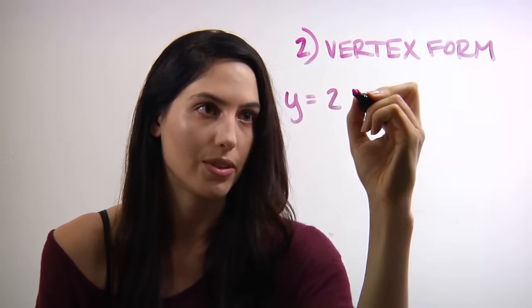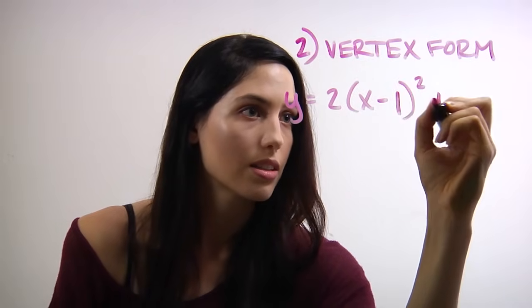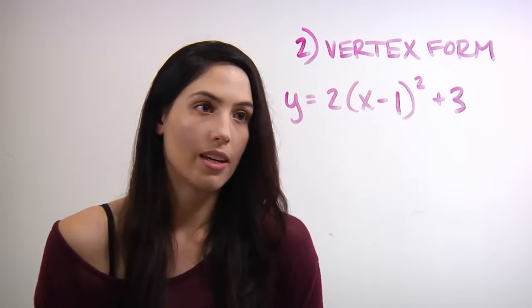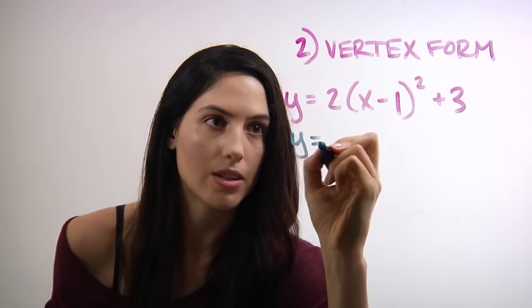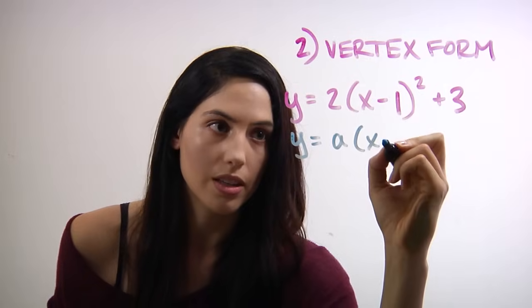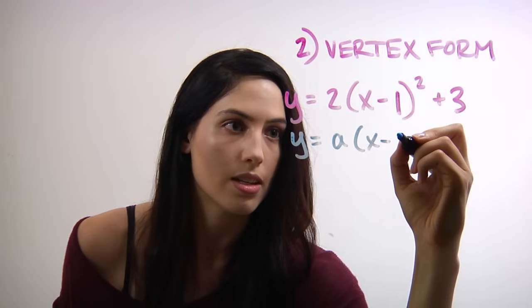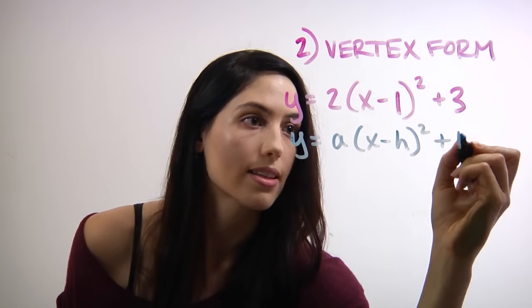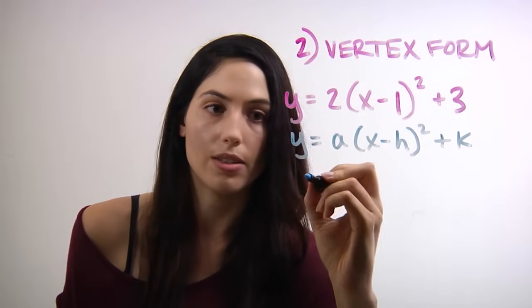So your vertex is the point (1, 3). Now we're going to look at the vertex form, which is great because it's super easy. This one is actually a lot easier because if you're given this form, you can literally pull the vertex coordinates straight from the equation. The vertex form in general looks like y equals a times the quantity x minus h squared plus k. All you need to know is that (h, k) is your vertex.